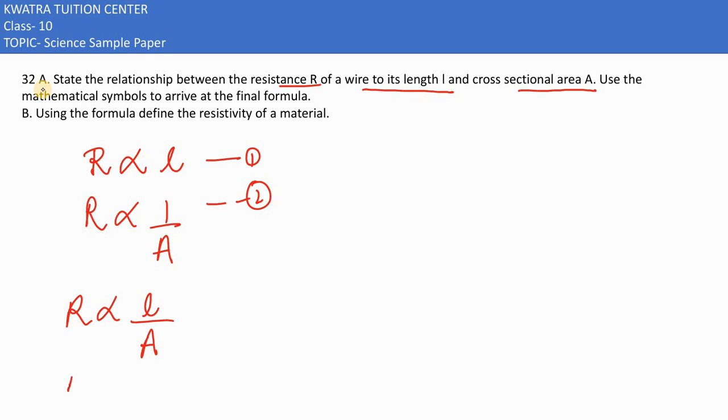Now, if we remove the proportionality sign, we get rho here, L here, A on the bottom. So the formula for resistance is R equals rho L over A. This is how you derive the final formula using mathematical symbols.